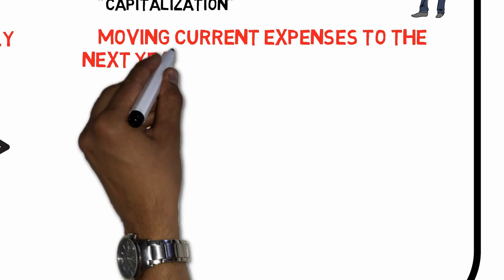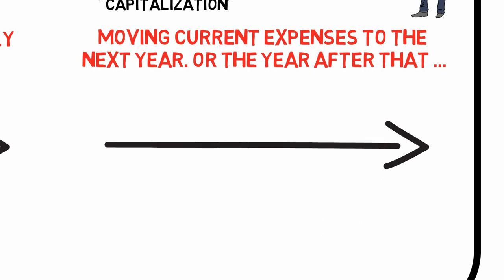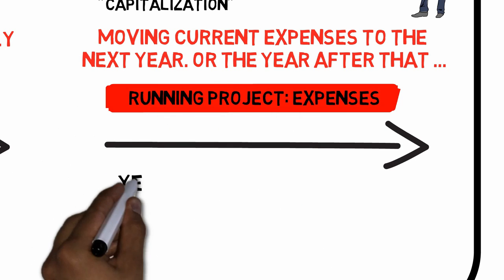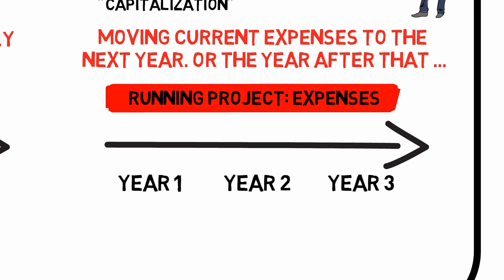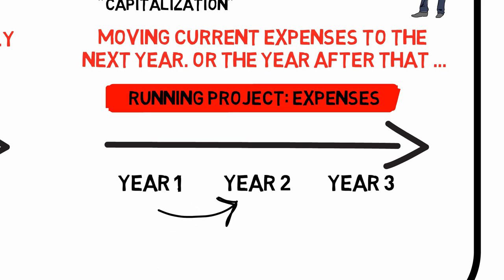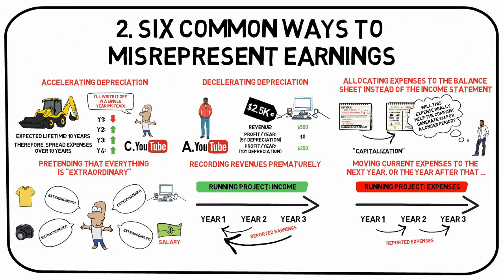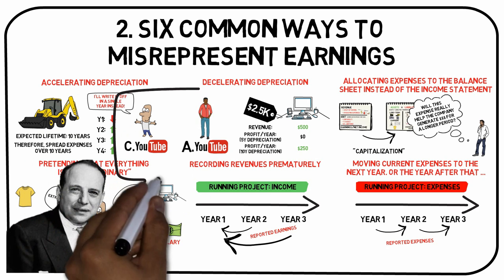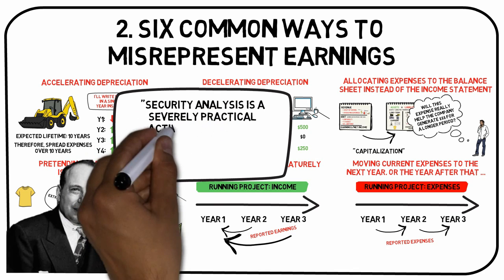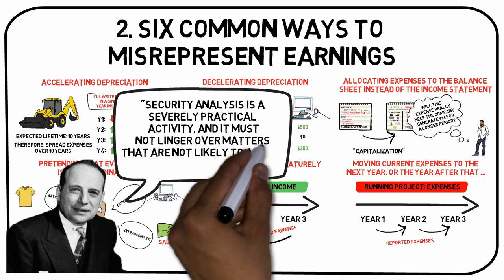The sixth method: moving current expenses to the next year, or the year after that. The height of hypocrisy is reached if a company records its earnings prematurely but takes the exact opposite stance when it comes to expenses. Let's say a YouTuber hires a programmer to set up a website — maybe it's up and running, but there's still an ongoing contract for updates after the first year. The investor will want to see expenses accumulated so far, but the books may fail to show this. If uncertain, always compare to competitors within the same industry.